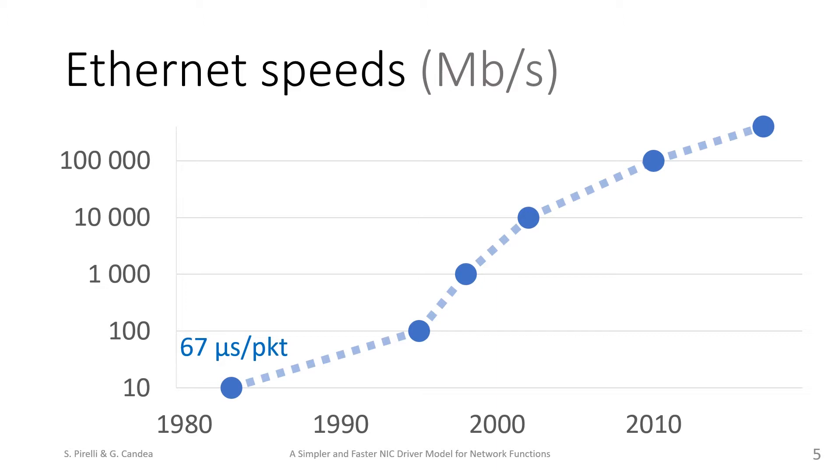With 10 Gbit Ethernet, this budget shrank to 67 nanoseconds, which is less than the time it takes to access main memory. With 400 Gbit Ethernet, this budget is now under 2 nanoseconds, so even accessing the CPU cache is too much.